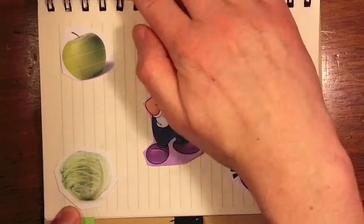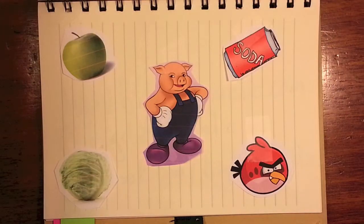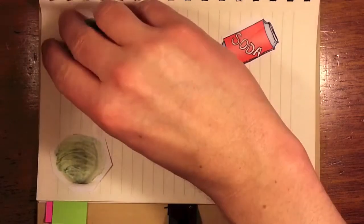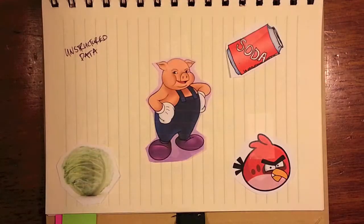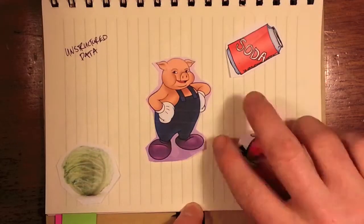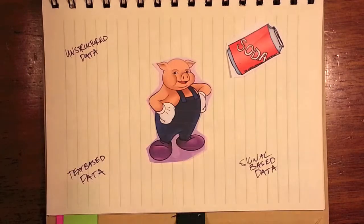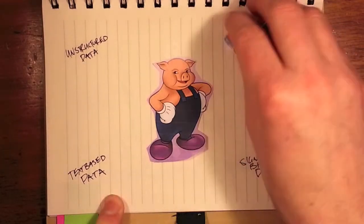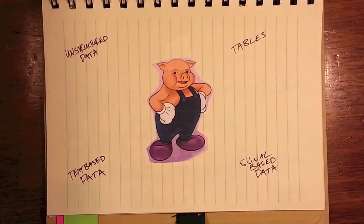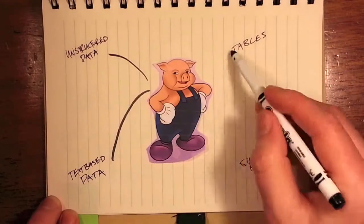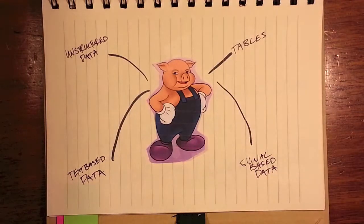Like the animal, Pig is not a fussy eater, getting its name from its ability to crunch through data no matter what form it takes. It acts as a scripting interface to Hadoop, meaning a lack of MapReduce programming experience won't hold you back.